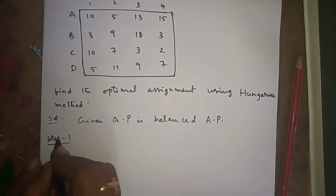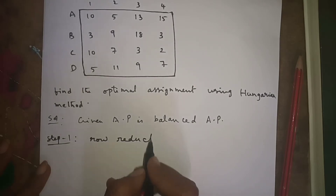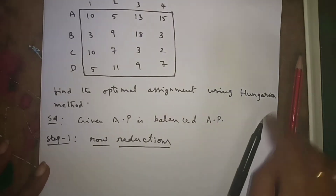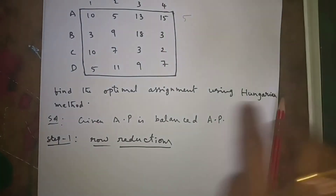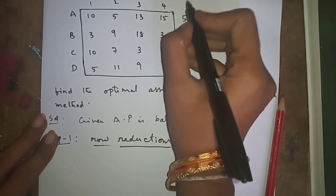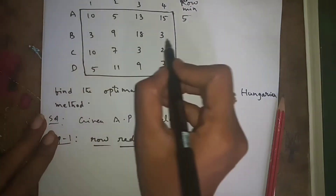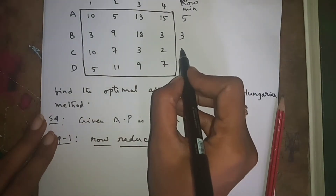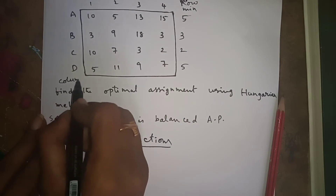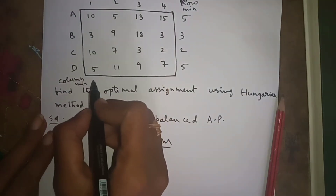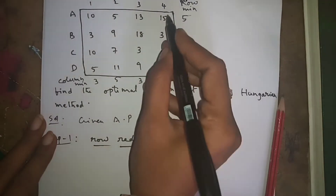Step one: row reductions. First we will do row reductions. The minimum value in the first row is five. Row minimums: first row minimum is five, second row minimum is three, third row minimum is two, fourth row minimum is five.